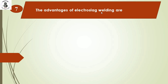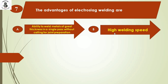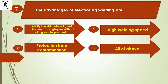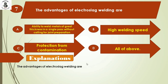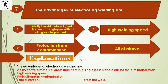The advantages of electroslag welding are: Option A: ability to weld metals of great thickness in a single pass without calling for joint preparation. Option B: high welding speed. Option C: protection from contamination. Option D: all of the above. The advantages include all of the above, and you can also consider little distortion and good stress distribution across the weld. So the right answer is option D: all of the above.